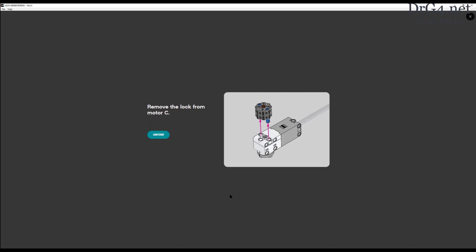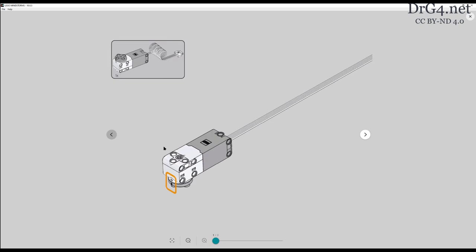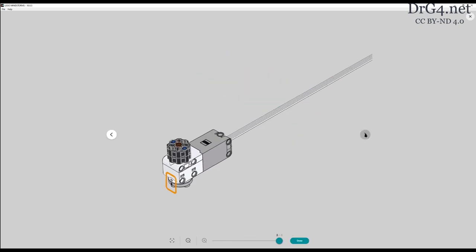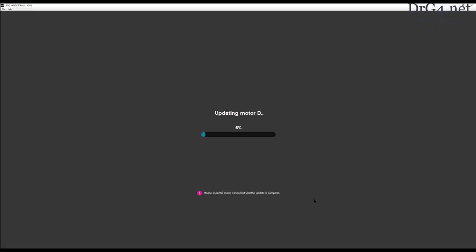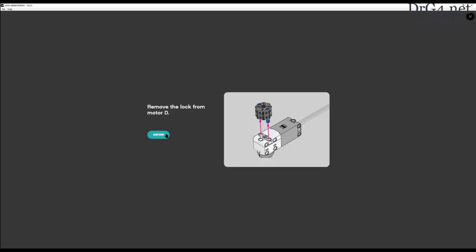We remove the lock from motor C. We attach it to motor D and go through the same process again. Fortunately, updating each of these motors is much quicker than updating the robot inventor hub itself. Good. So we remove the lock from motor D, and we're almost there.